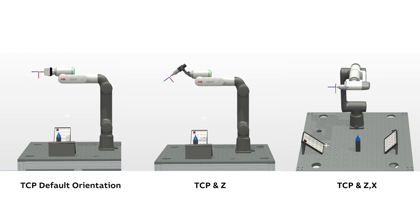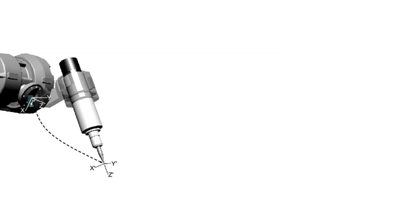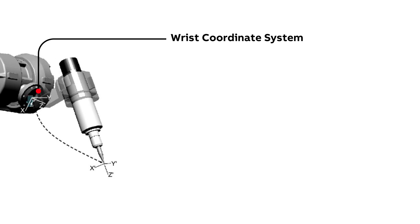How do we define a tool? We have mentioned that a tool has a coordinate system and that it has some physical properties. Let's have a look at the coordinate system. There are lots of different tools out there — some are straight, some are bent. Three methods are used when defining a tool. With the coordinate system, you need to know where it is located; that is, you need its origin or reference position to define another coordinate system. So for the tool coordinate system, we have the reference position at the flange of the robot — the so-called wrist coordinate system.